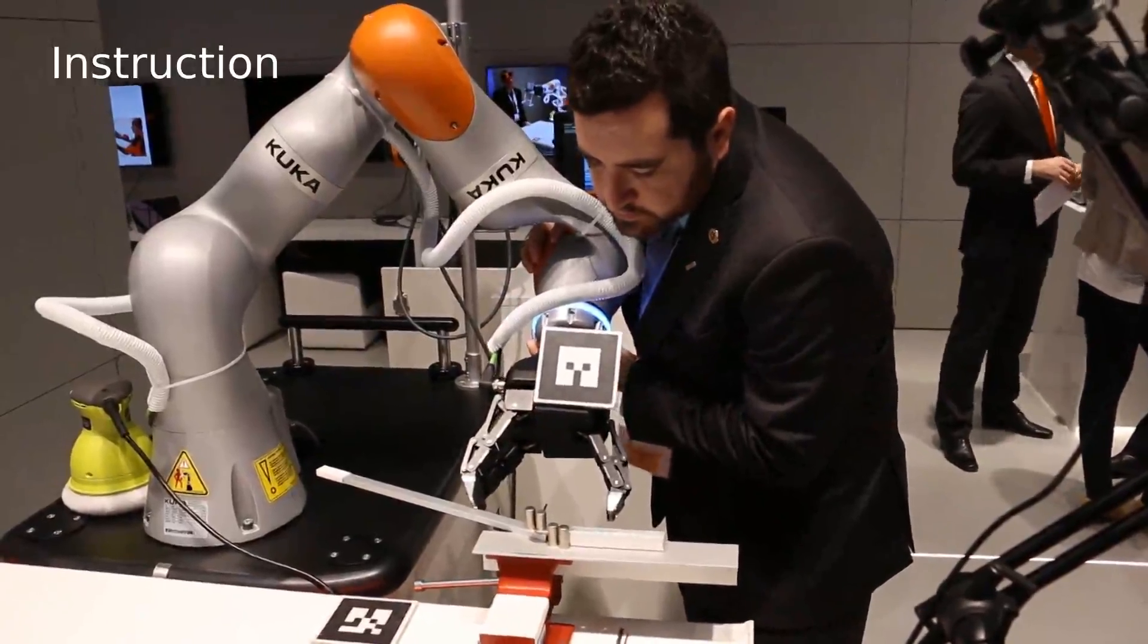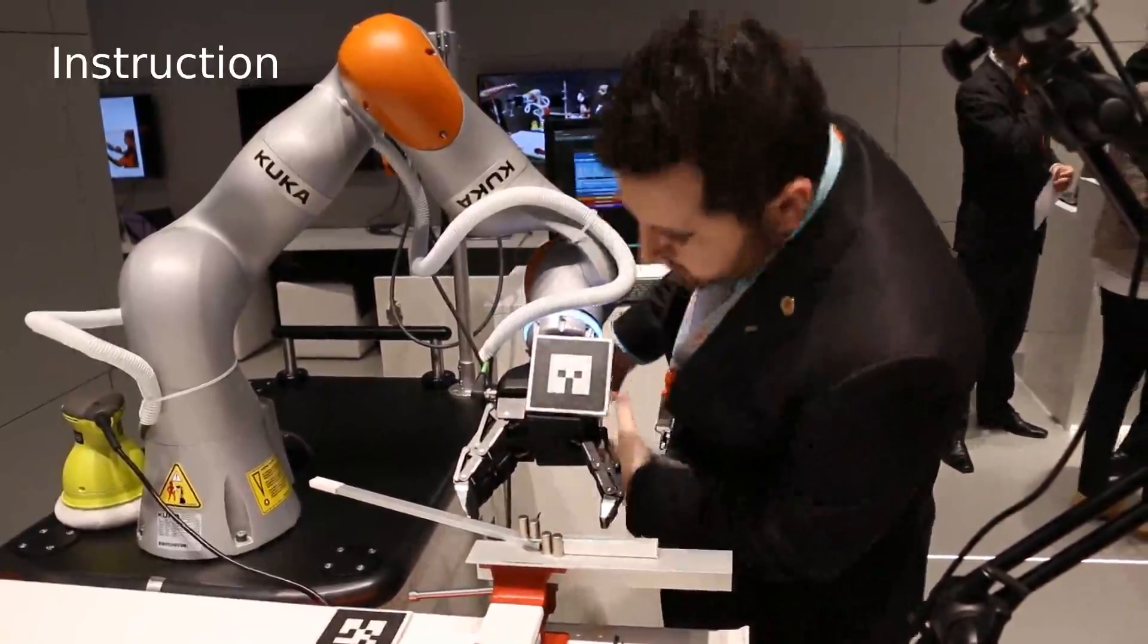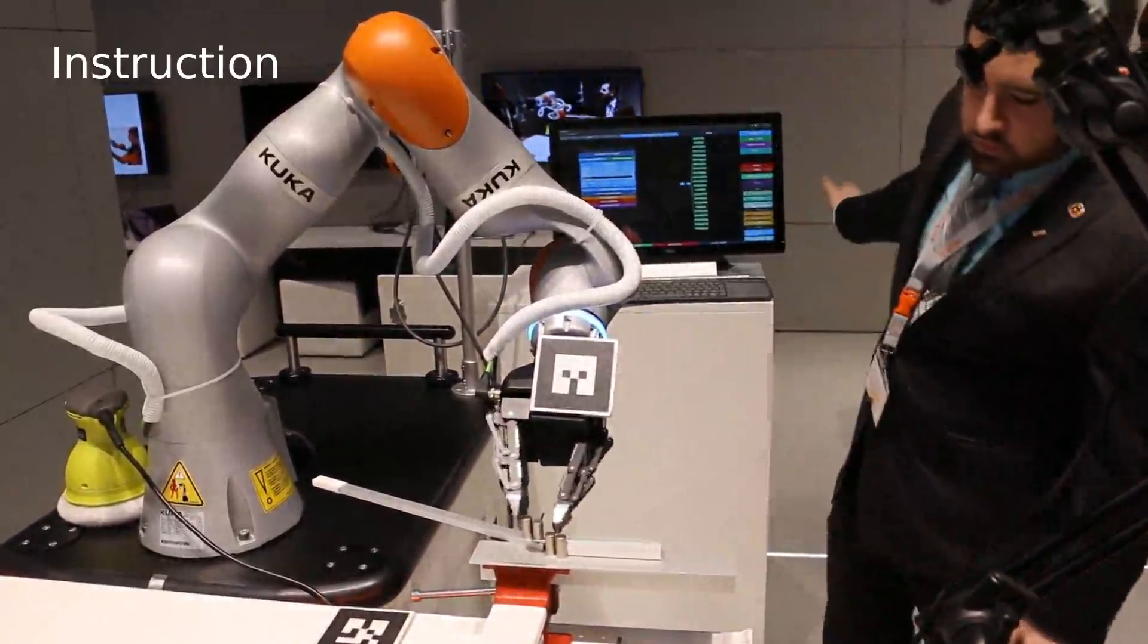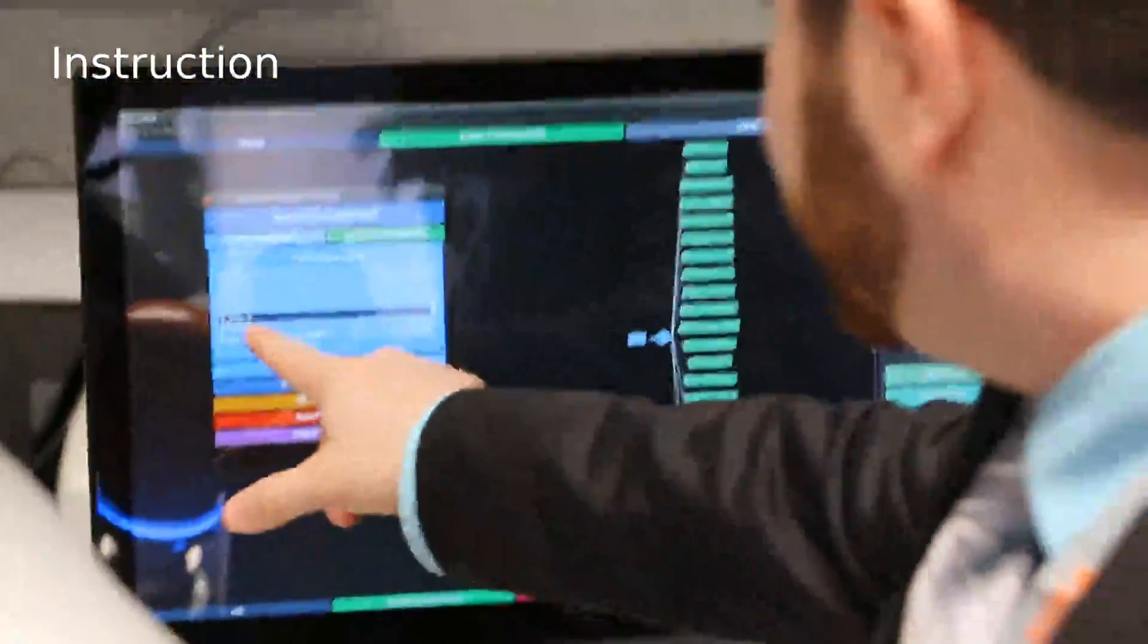In this wire bending task, the robot needs to pull a lever and then take a finished part from a jig. The user instructs the robot with a combination of physical interaction and use of the interface.